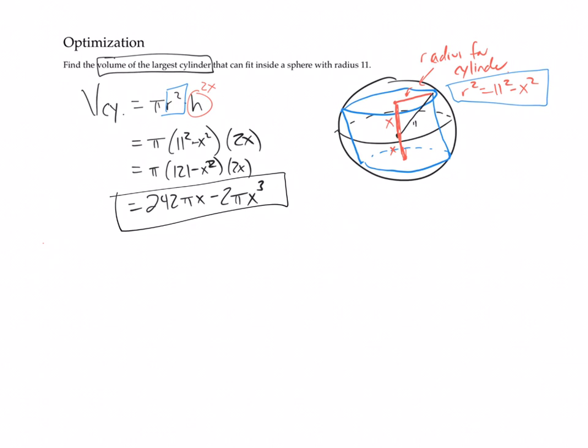So this function is what we're needing to optimize. If we can figure out the smallest x for this function, then we will have figured out exactly what we need. So let's take the derivative. So v prime for the cylinder, that's going to equal 242 pi minus 6 pi x squared. I'm going to set that equal to 0. So 242 pi minus 6 pi x squared equals 0.